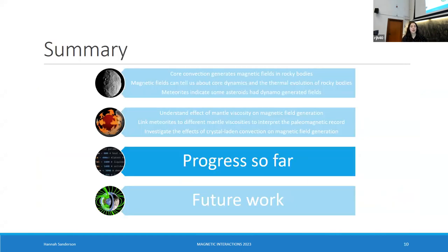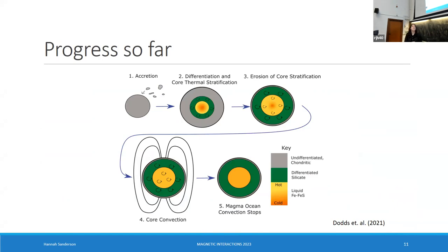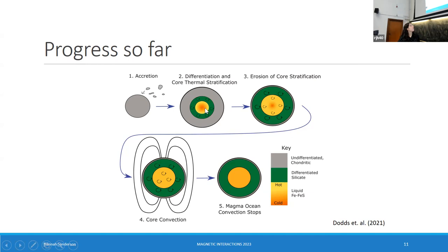So far, a lot of my effort has been building a thermal evolution model of asteroid evolution. Here is a cartoon of what happens in an asteroid's life. Firstly, we have the accretion of chondritic material — bits of undifferentiated material come together and form an asteroid. Then we have radiogenic heating by aluminium-26, which heats up a portion of the asteroid and melts it. That can lead to the formation of a mantle — shown here in green — and then a metal core, where yellow is hot and red is cold.